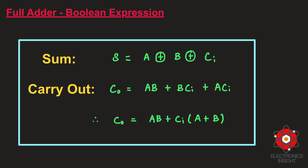This validation was given in the previous video on full adder implementation using transmission gate. Those who want to understand how A+B is equivalent to A XOR B can refer that video — the link is shared in the description box below. Now let us move on to the reorientation of the sum and carry out expressions for the convenience of implementing using pass transistor logic based design.